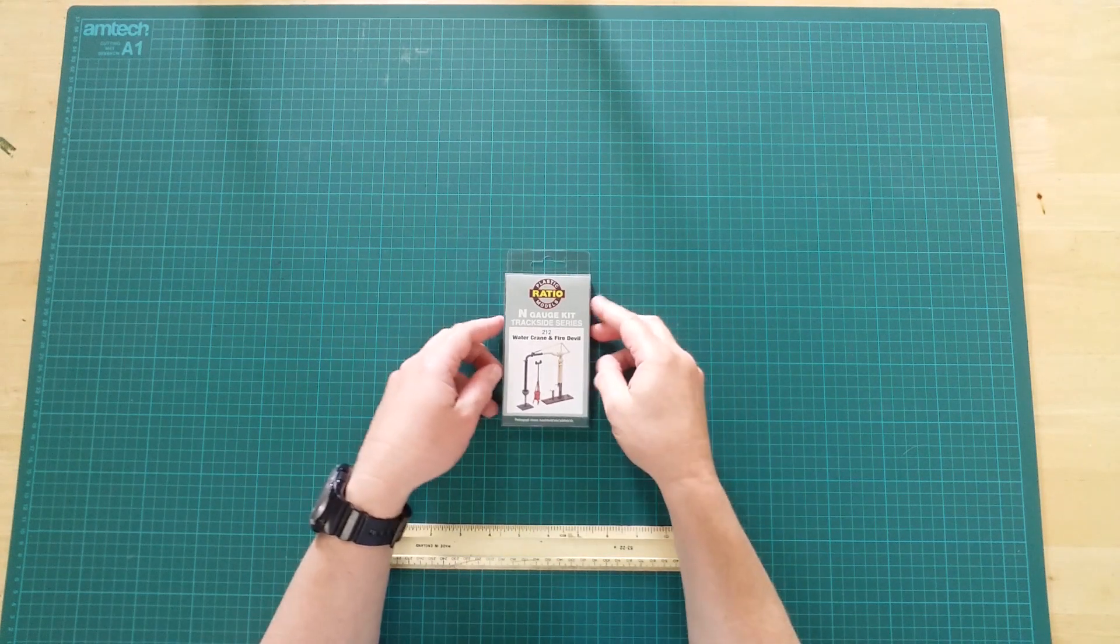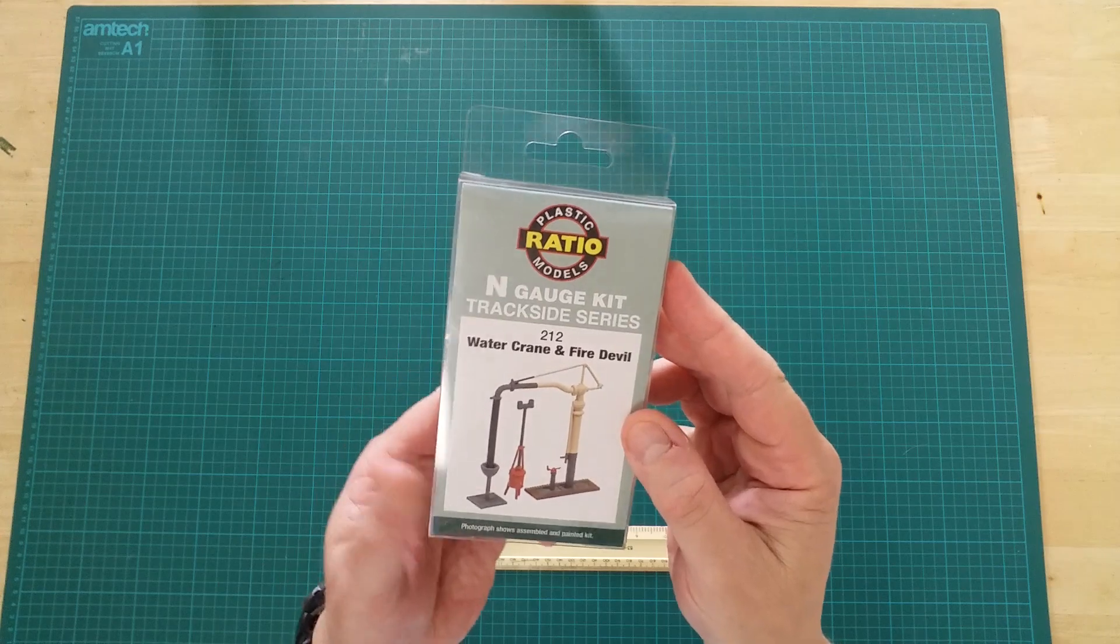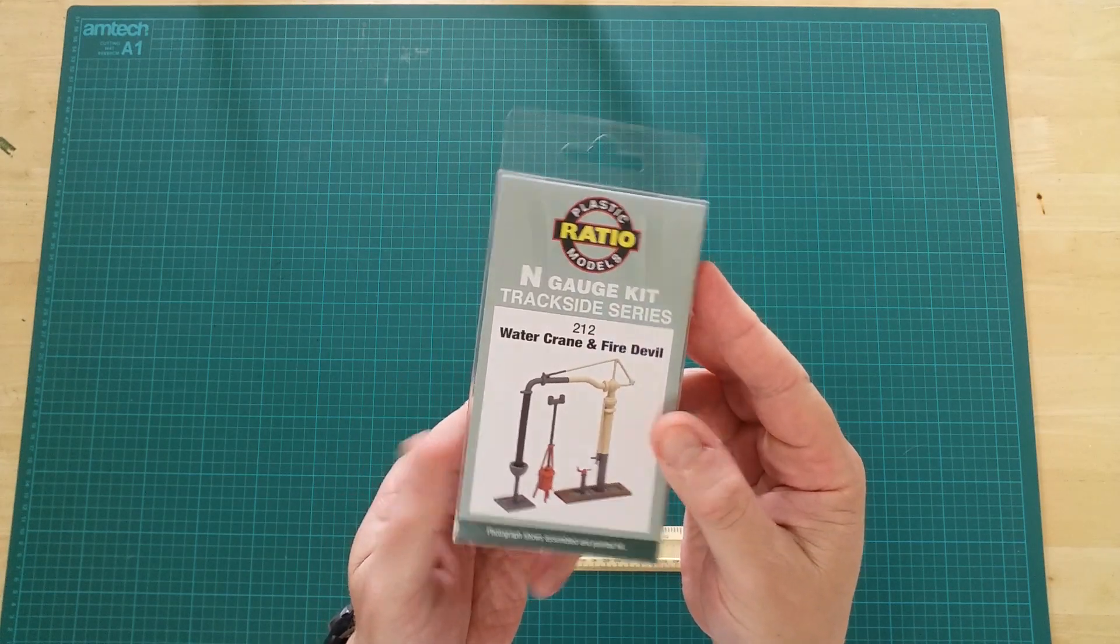This is the 212 Water Crane and Fire Devil by Ratio models in N-Gauge.